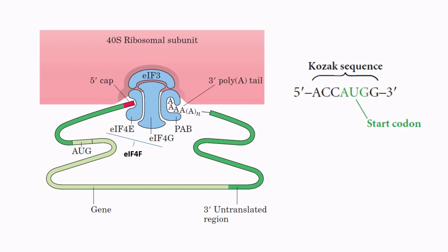So in this video we have learned about ribosomes and their different components, the structure of the tRNA, how the tRNA is activated and binds with the amino acid, and how the AUG codon is identified in prokaryotes and eukaryotes. Thank you so much for watching this video.